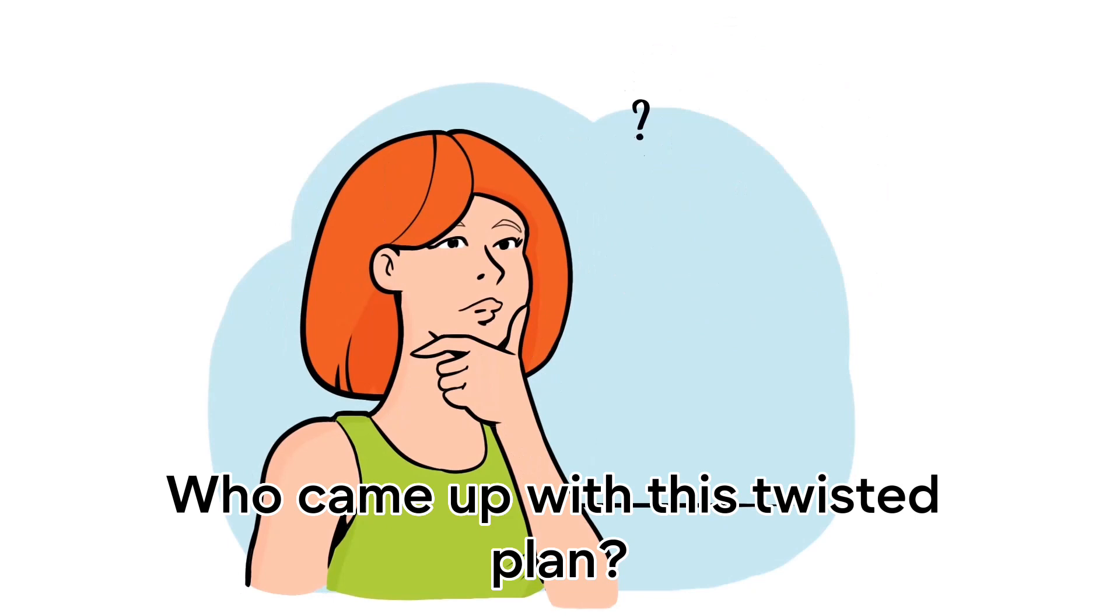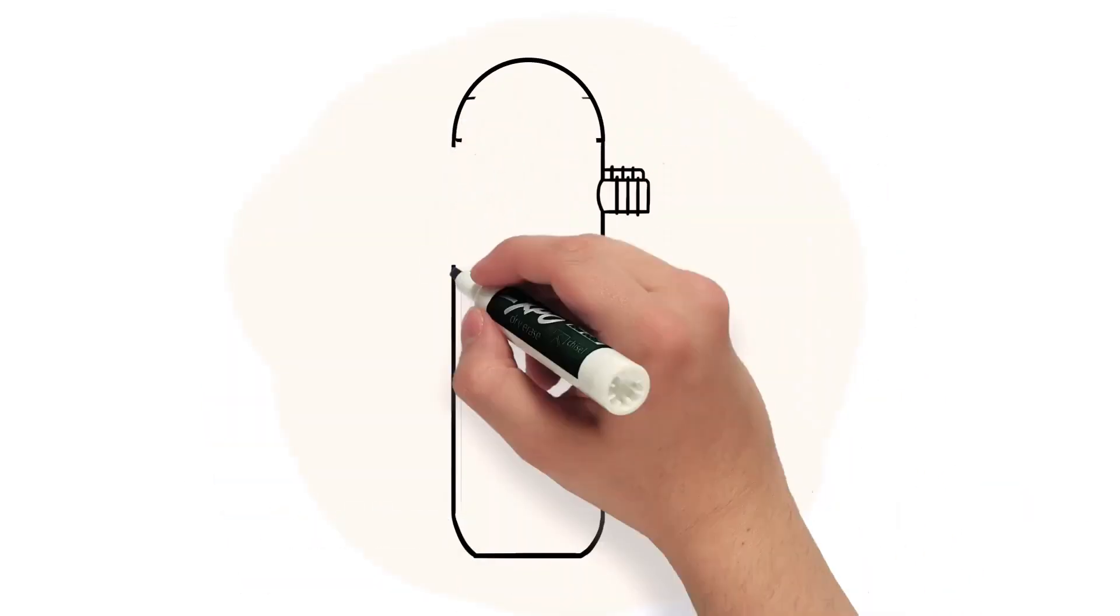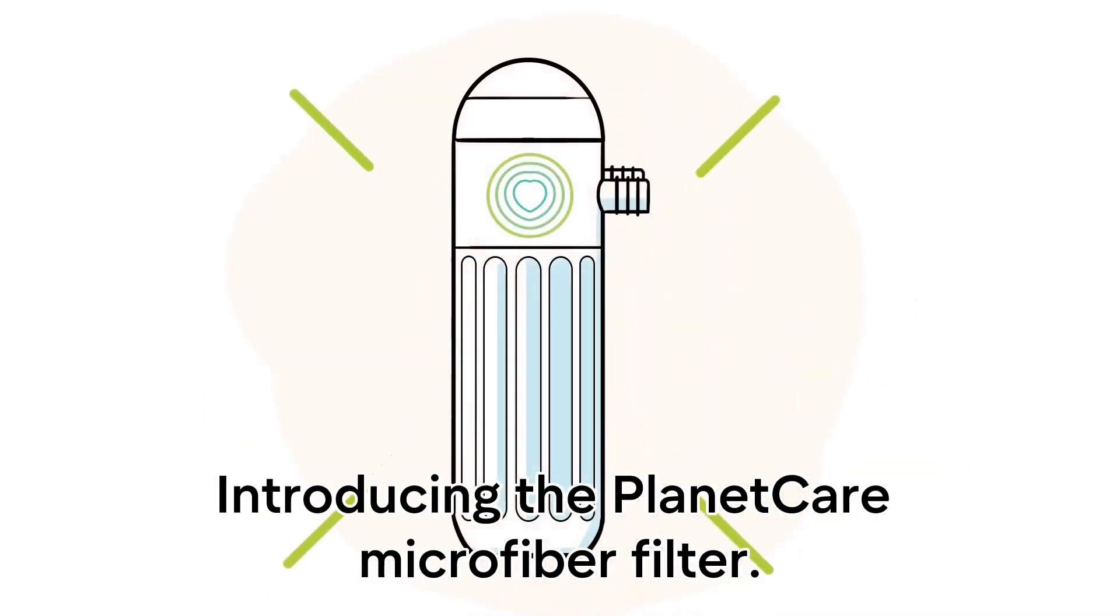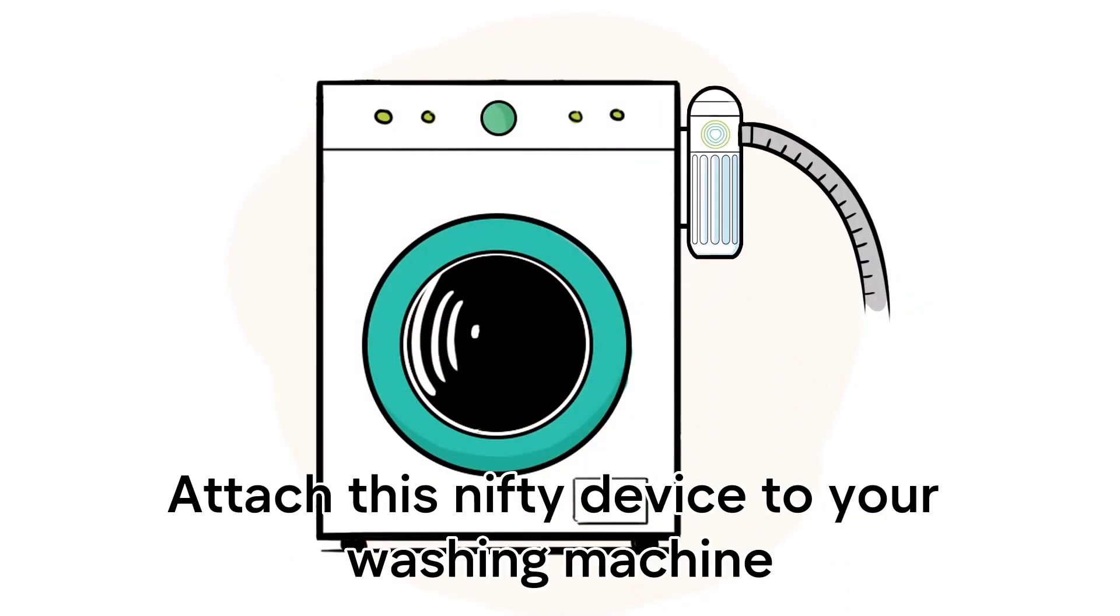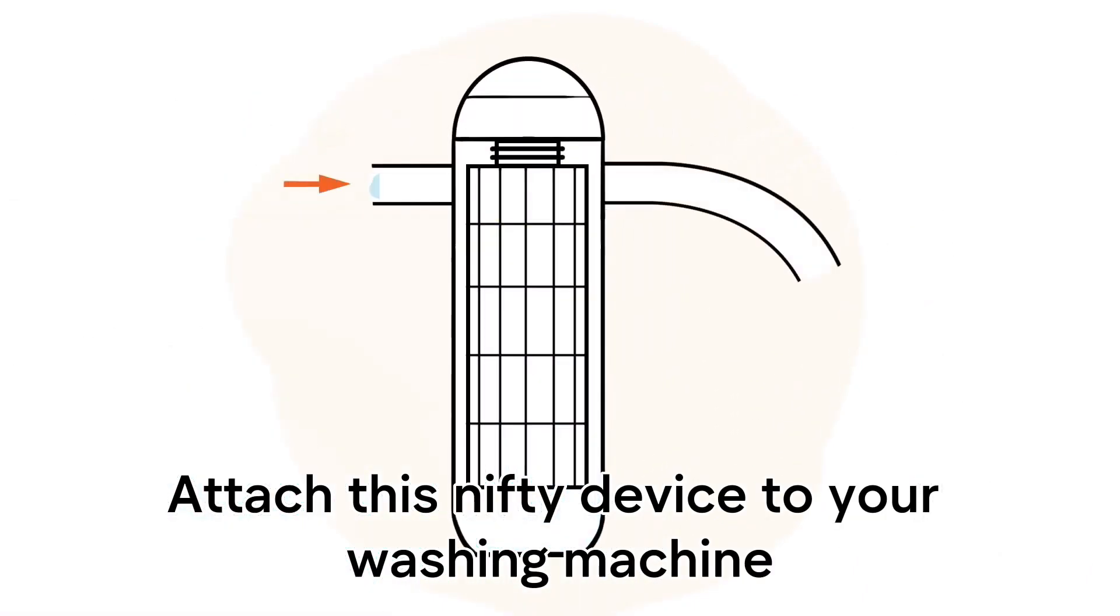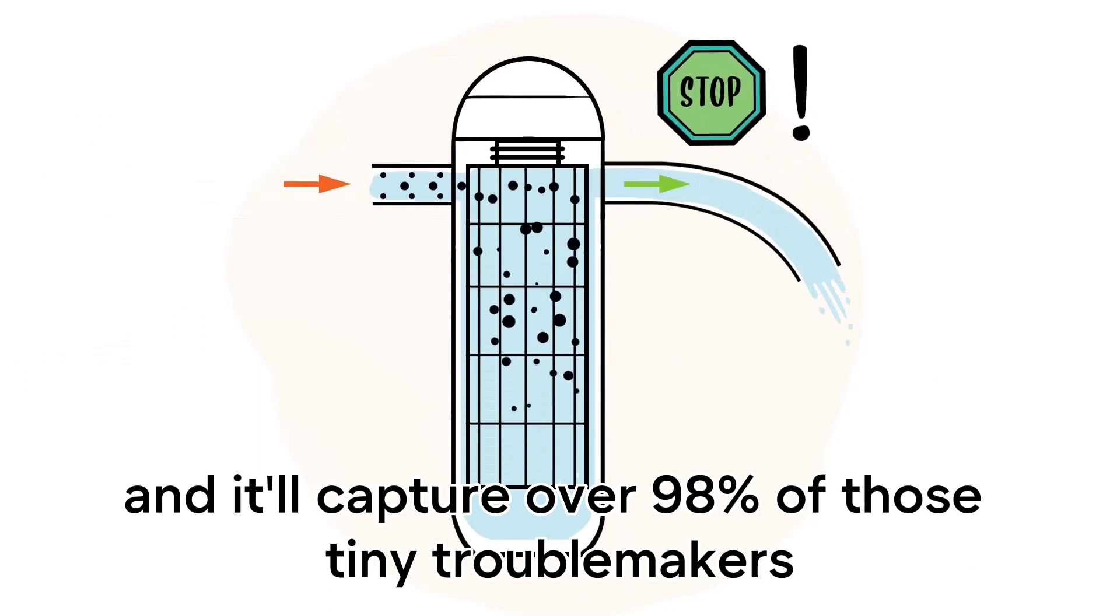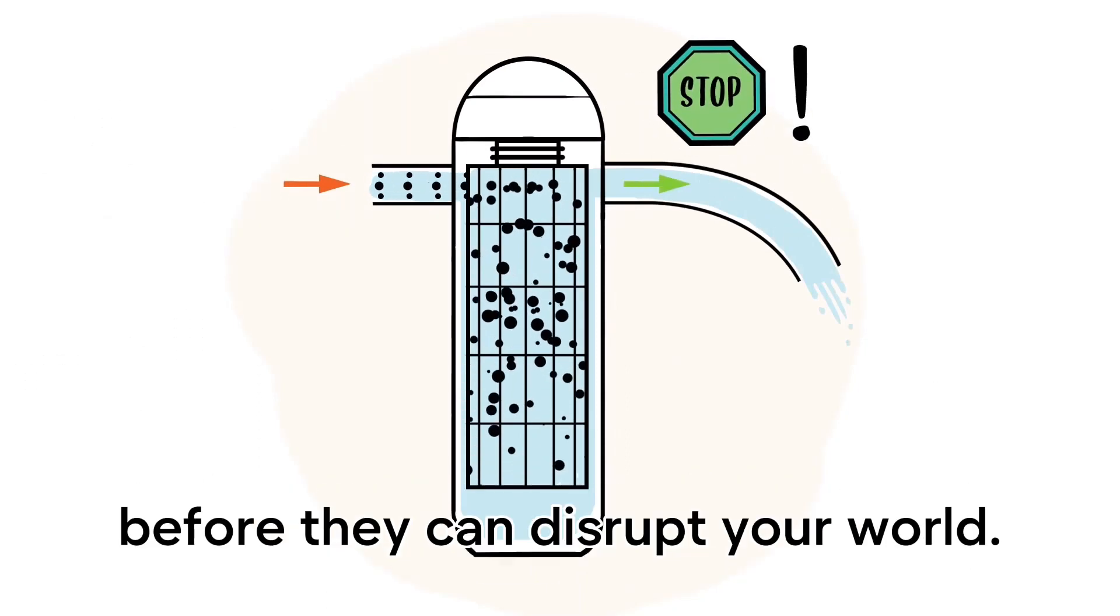Who came up with this twisted plan, and how do we bust it? Introducing the PlanetCare Microfiber Filter. Attach this nifty device to your washing machine, and it'll capture over 90% of those tiny troublemakers before they can disrupt your world.